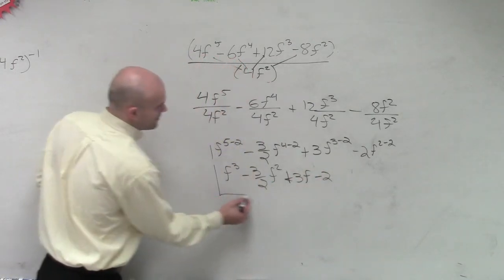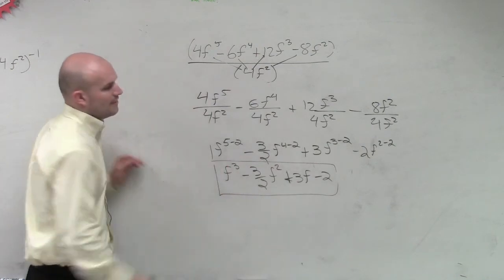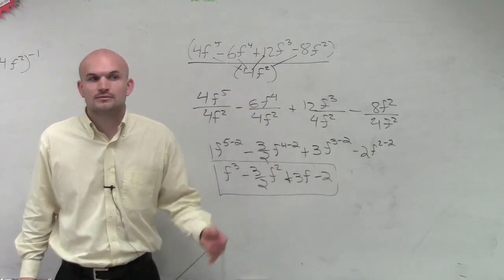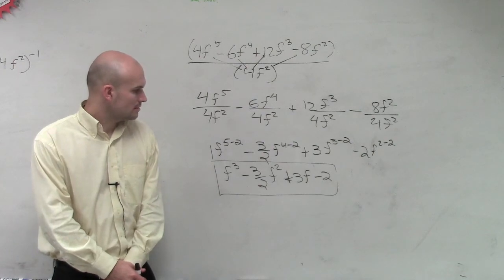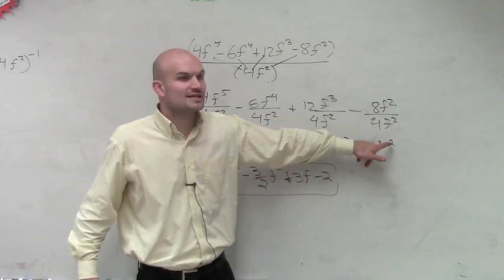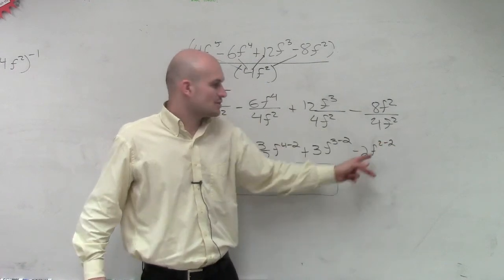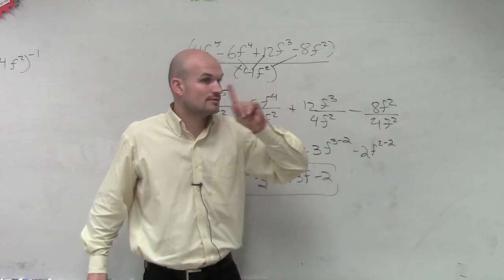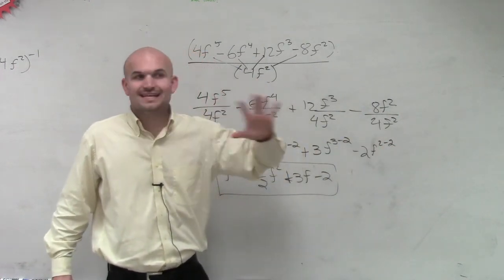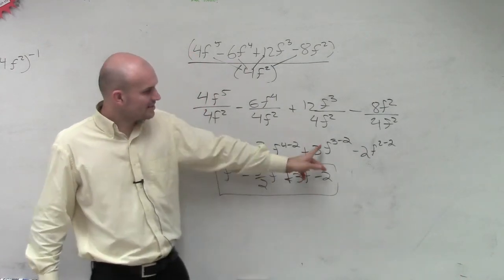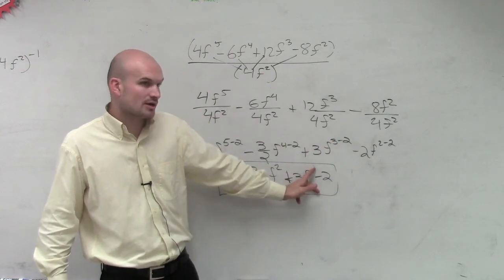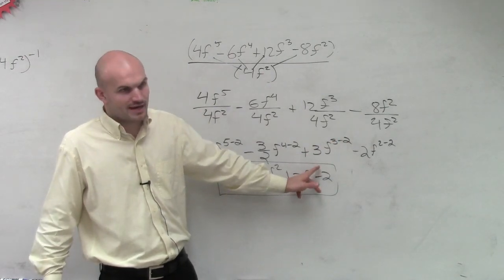So therefore, ladies and gentlemen, that is your final answer. Where did you get f minus 2, if 2 minus 2 is 0? 2 and 2? So 2 minus 2 is 0. Right. So f to the 0 power equals 1. Anything to your 0 power is going to be 1. This is 3 minus 2, which is f to the first power, which we don't need to write to the first power. We can just write f. So it's 3 times f, and then negative 2 times 1 is just going to be negative 2.